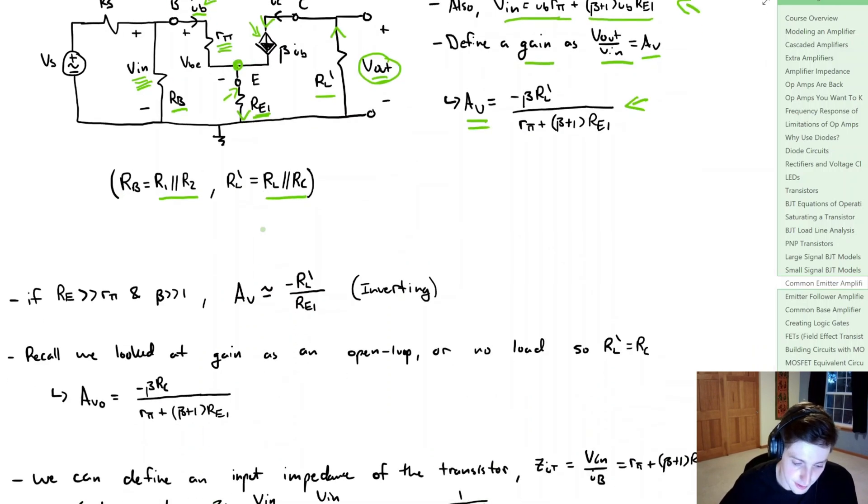Now if the emitter resistor, call it RE1, if that's much much greater than Rpi, and our gain is much much greater than one, well we can say that the voltage gain is approximately equal to minus RL' divided by RE1. And just take note of the minus sign here so we have this inverting effect going on.